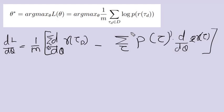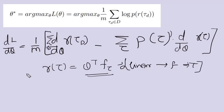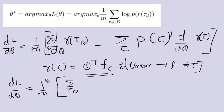Once we substitute, we obtain the summation over all tau times probability of tau given the state transition matrix and the policy. We can substitute the value of the reward function — we already know that the reward for any trajectory is theta transpose times the features of that trajectory, since we assumed the reward is a linear function of the features.